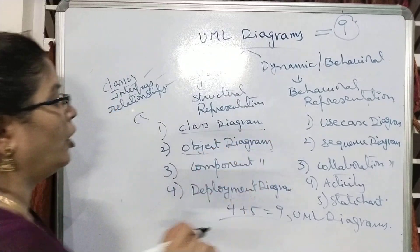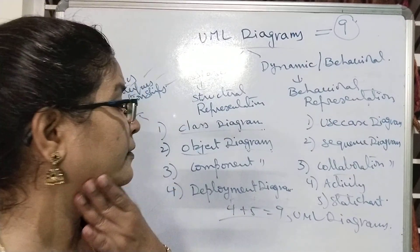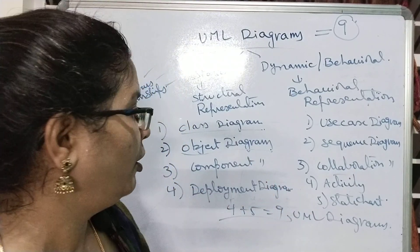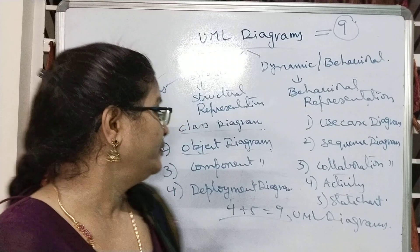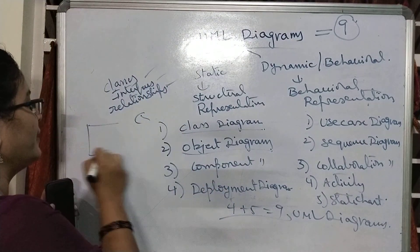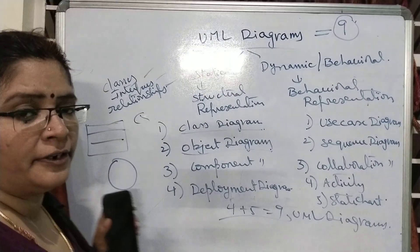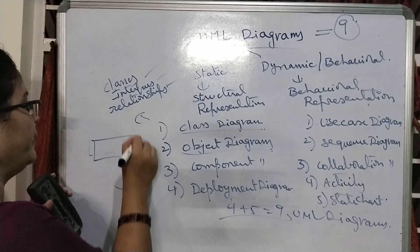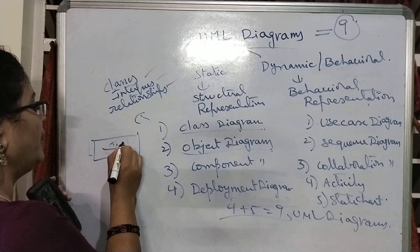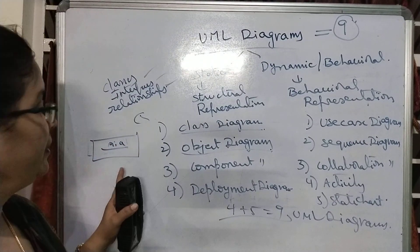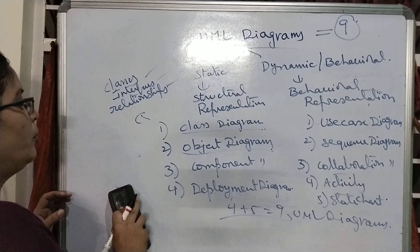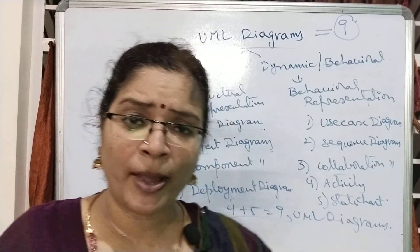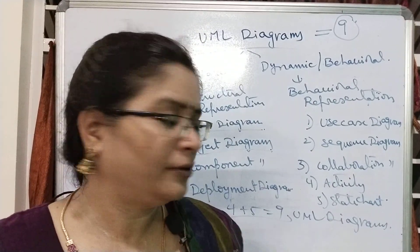The next one is the object diagram. This object diagram shows the set of objects within the system and how statically these objects are connected with each other. A class can be represented by a three-part box, an interface can be represented by a circle, and an object can be represented with a rectangle. The next one is component diagram. Components are nothing but a collection of classes, interfaces, relationships, and packages — the collection of grouped things is the component diagram.